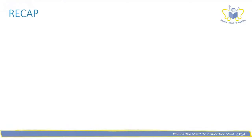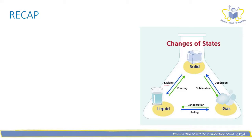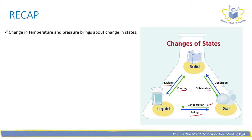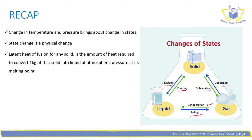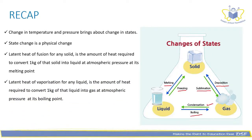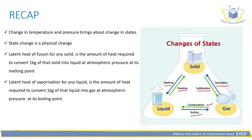Now it is time for a recap. Conversion of solid to liquid is called melting. Conversion of liquid to solid is called freezing. Conversion of solid to gas is called sublimation. Conversion of gas to solid is called deposition. Conversion of liquid to gas is called boiling. Gas to liquid is called condensation. Change in temperature and pressure brings about change in states. State change is a physical change. Latent heat of fusion for any solid is the amount of heat required to convert 1 kg of that solid into liquid at atmospheric pressure at its melting point. Latent heat of vaporization for any liquid is the amount of heat required to convert 1 kg of that liquid into gas at atmospheric pressure at its boiling point. Evaporation is a surface phenomenon that brings about a cooling effect in the surrounding.